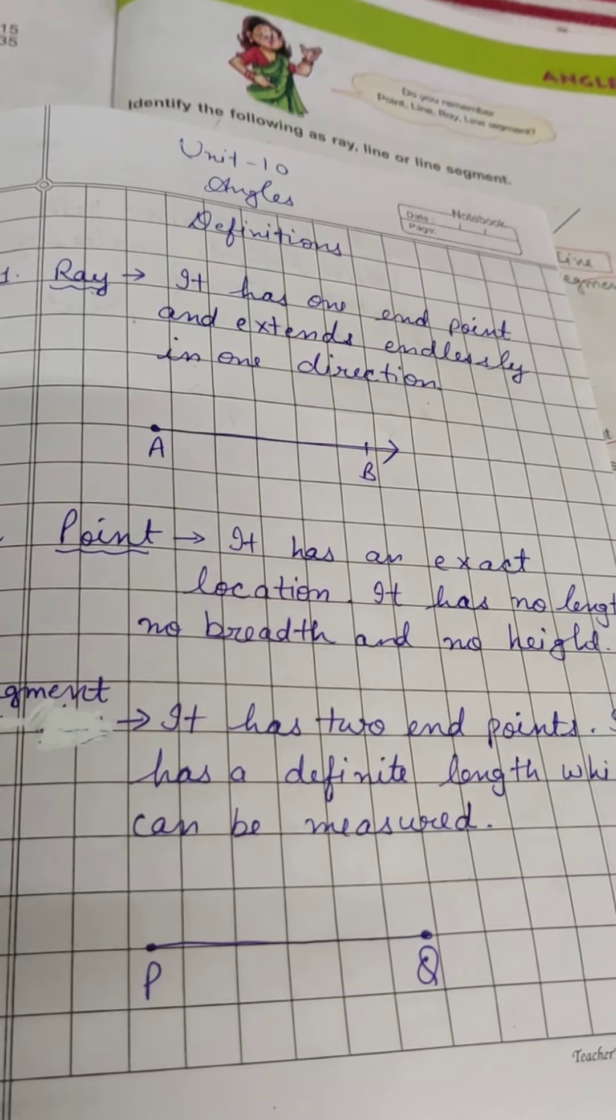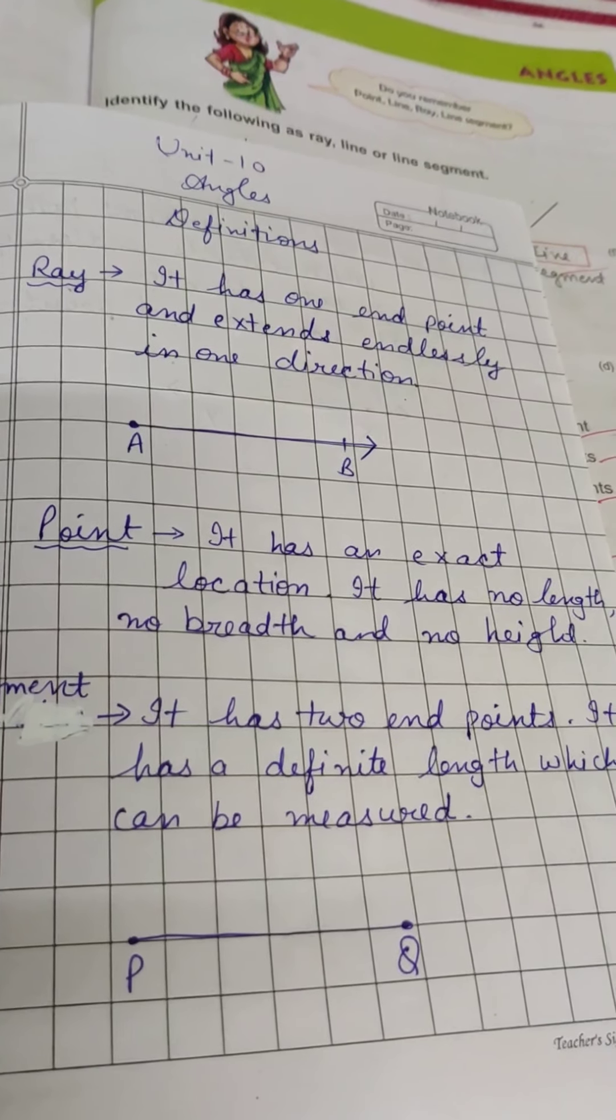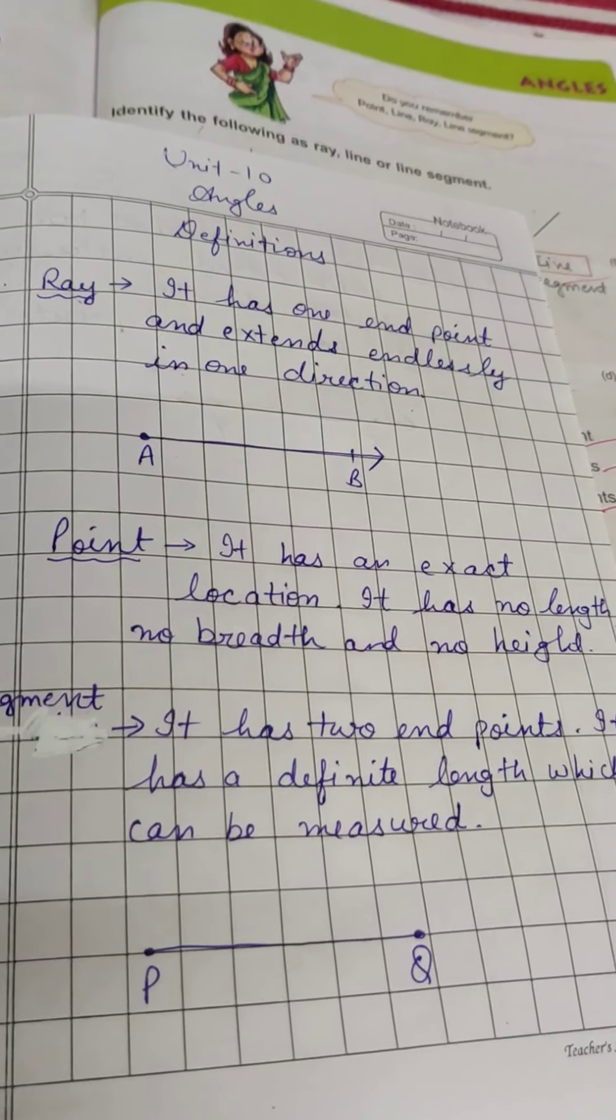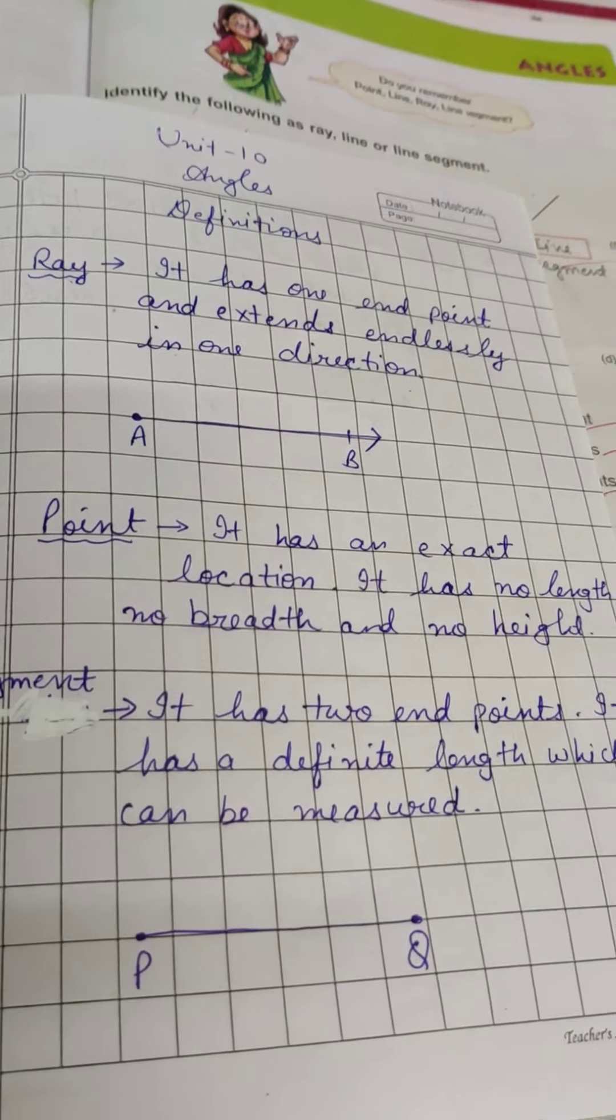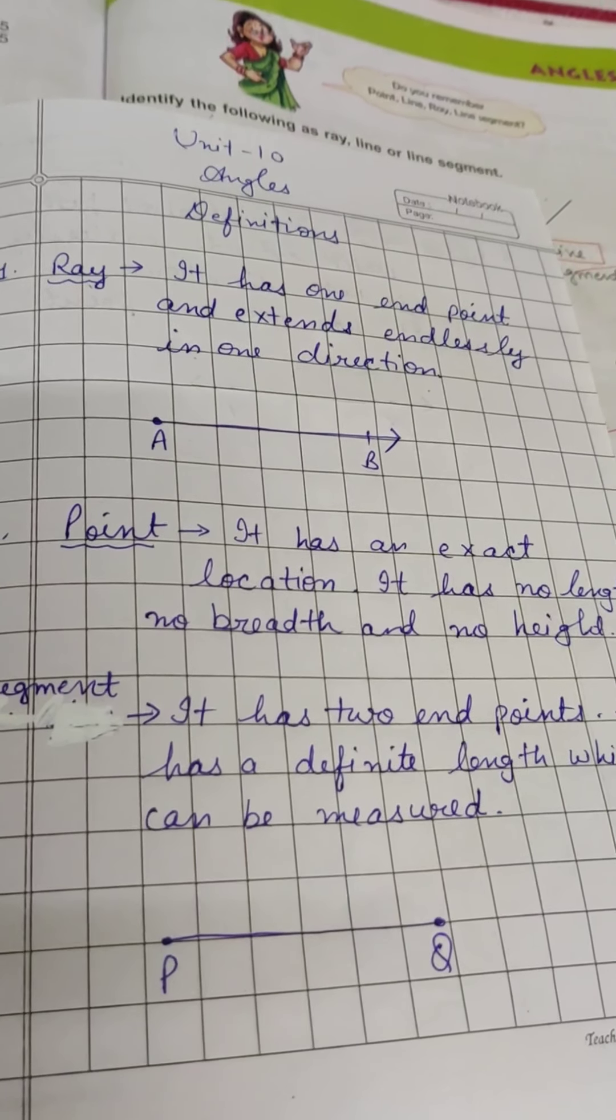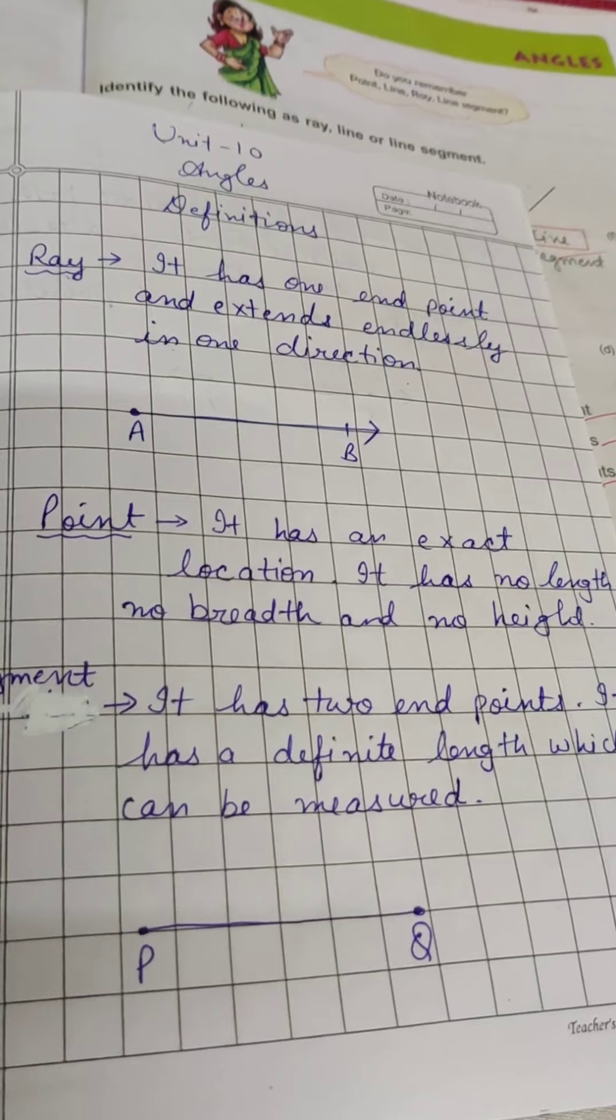Next, point. It has an exact location. We know exactly where is our location. We know the exact location. We know the length, breadth and height. We don't know the size.